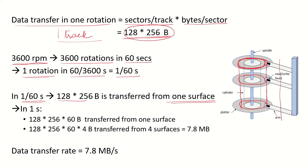This will be 128 into 256 divided by 1 upon 60. So this becomes 128 into 256 into 60 bytes transferred from one surface and it is given in the question that there are four surfaces.